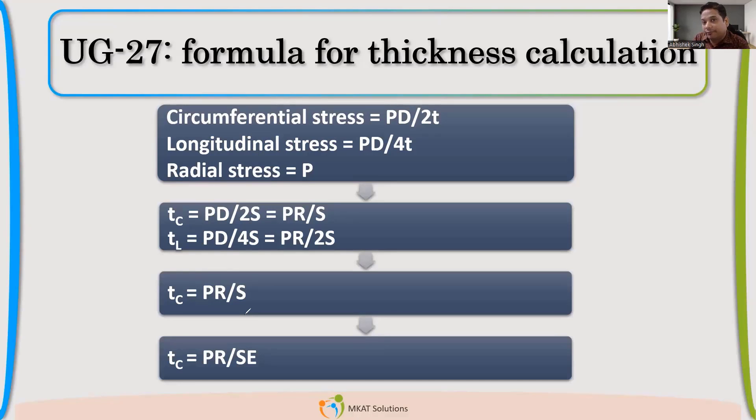So if I add joint efficiency, if I multiply that S value with E, I'll get the factor of weld efficiency also into the account. Now, does it look very close to what we see in the formula? Still, it may not be exactly, but if you remember PR/(SE - 0.6P). We'll come to that. We'll compare and see why that is modified. But now you see, it's started looking very similar to what we have seen. So this is the academic formula with joint efficiency added.